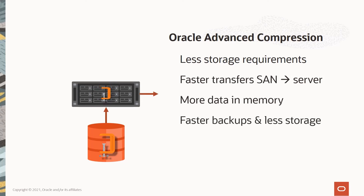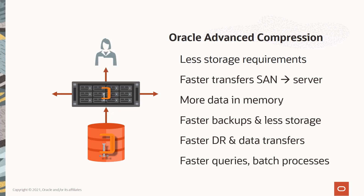We then perform most operations on the data in its compressed form. And of course there's a cascading effect: smaller data means faster backups and restores, and they take up less space as well. The compression stays with the data, not the SAN. Similarly, our data moves faster and requires significantly less network bandwidth when moving to our DR site halfway across the country. Put all this together and Oracle Advanced Compression gives us faster query performance, faster batch processes, and faster backups and data transfers.